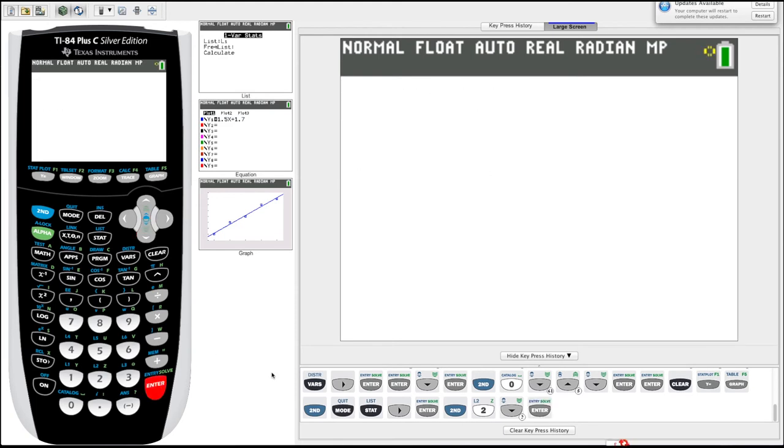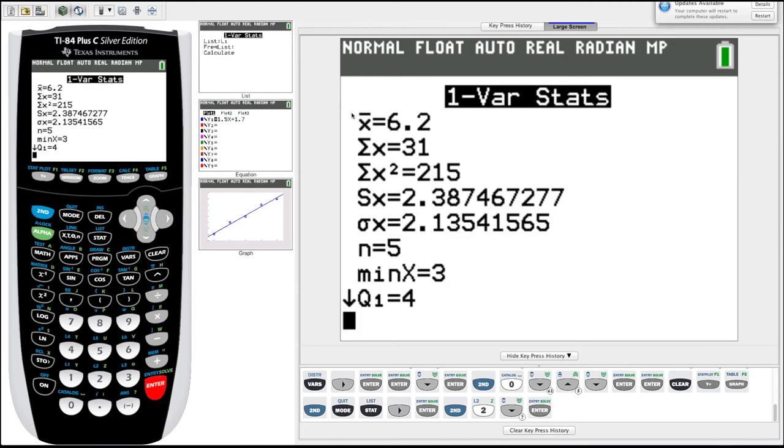All right, so a whole bunch of things pop up. X bar, which we know to be our average or our mean. Our X bar is, they're saying it's 6.2. Sum of X, this means summation of X. That's just all the data in that column added up. Summation X squared is just all that data squared and then added up. And then some important bits here.